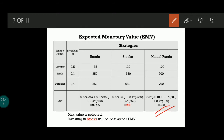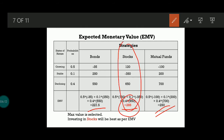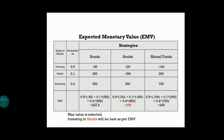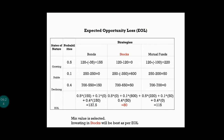Out of the three EMV values — 227 for bonds, 285 for stocks, and 250 for mutual funds — we find the maximum value. Since this is a profit matrix, we maximize profit. The maximum is 285, which corresponds to stocks. Therefore, investing in stocks is the best strategy as per the Expected Monetary Value method.